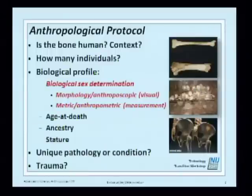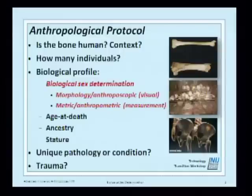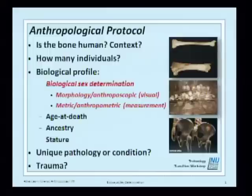The general anthropological protocol covers: first, is the bone human? What context is it in? Is it of forensic context? Is it prehistoric? How many individuals are present? Then we go into the biological profile. Since I'm discussing biological sex determination, there are two main means: visual assessment, or anthroposcopic, and measurements, anthropometric.